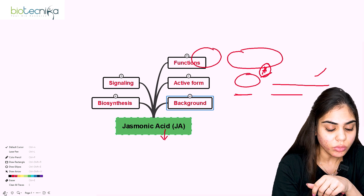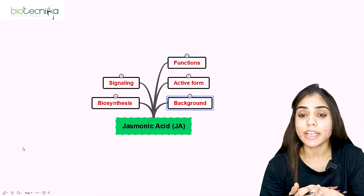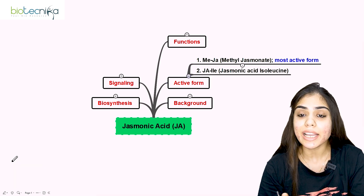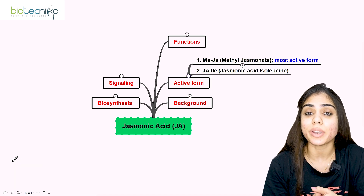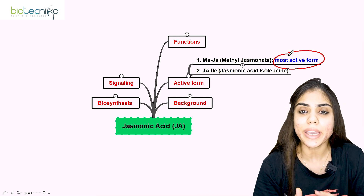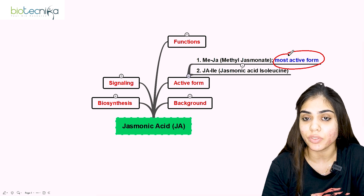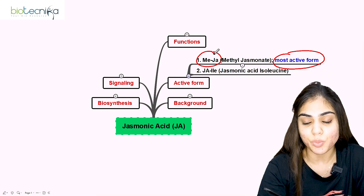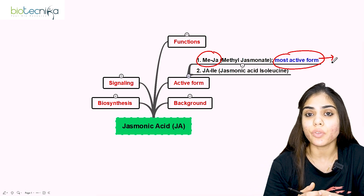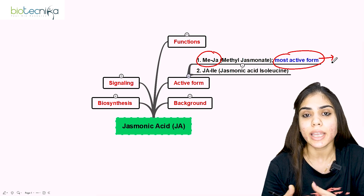Jasmonic acid is present in two active forms. The first active form is methyl jasmonate, which is the most active form of jasmonic acid. If a question asks about the most active form, the answer is methyl jasmonate. It is also one of the highly negative regulators of higher plants, involved in preventing the plant against different types of pest, herbivore, and pathogen attack.